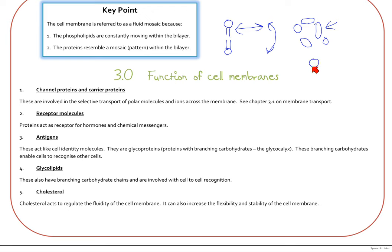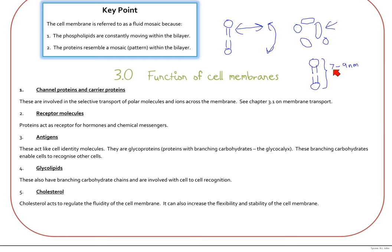One important measurement to know: the cell membrane is seven to nine nanometers thick. This is incredibly thin, and that measurement includes any proteins embedded within the bilayer as well.